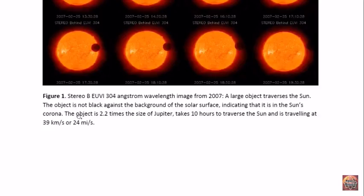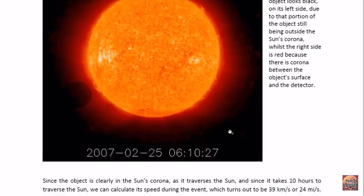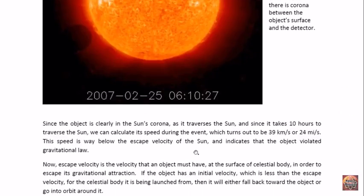The object was about 2.2 times the size of Jupiter, and it took 10 hours to traverse the sun. So we could calculate its speed to be 39 kilometers per second or 24 miles per second. Now this speed seems initially to be quite fast, but it is in fact very slow. It's much less than the sun's escape velocity, which means that it violated gravitational law.